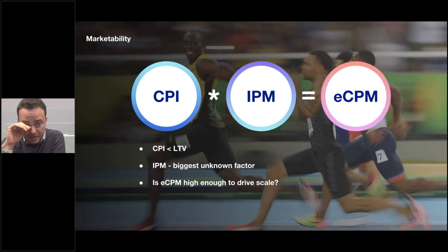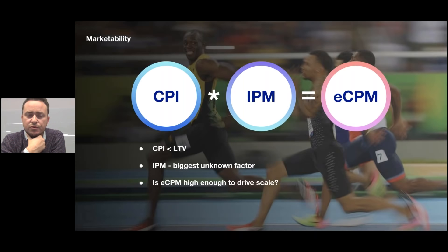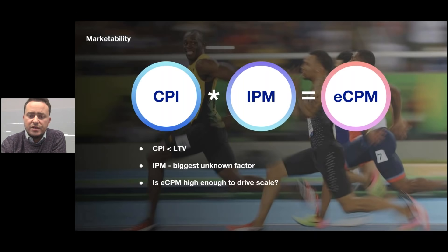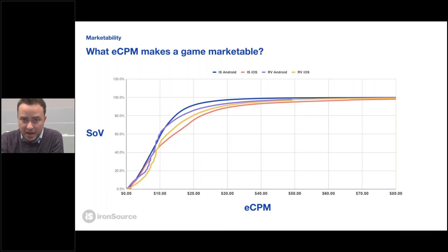ECPM is a metric of how much revenue you are spending on 1,000 impressions from the user acquisition perspective — although this metric is usually used from the ad monetization perspective to gauge the effectiveness of the ads you show in your game. It is very important to measure from the marketing perspective as well, and it really helps you measure the effectiveness and potential of what you're trying to achieve with your strategy. As we've established CPIs for games A and B — $1 for game A and $0.20 for game B — the combination of that CPI bid with the IPM will dictate the ECPM of our campaign.